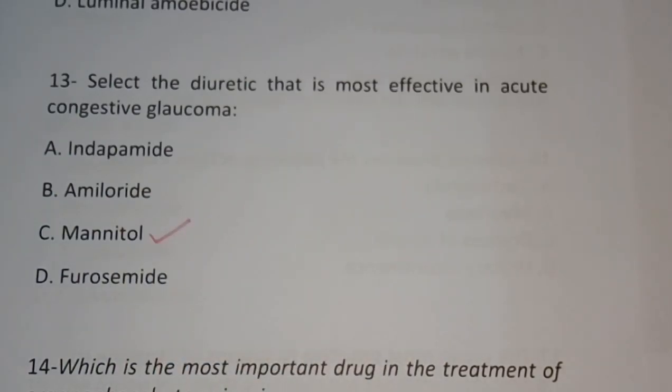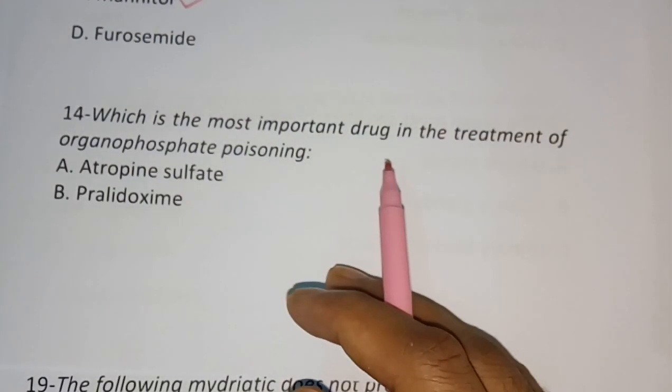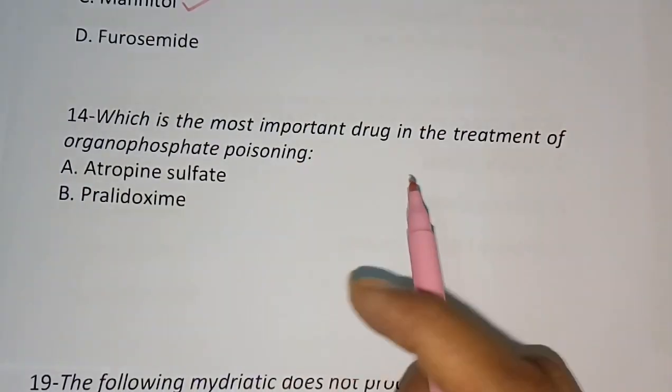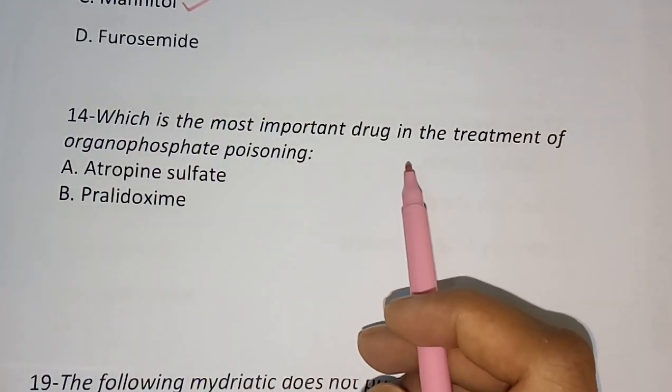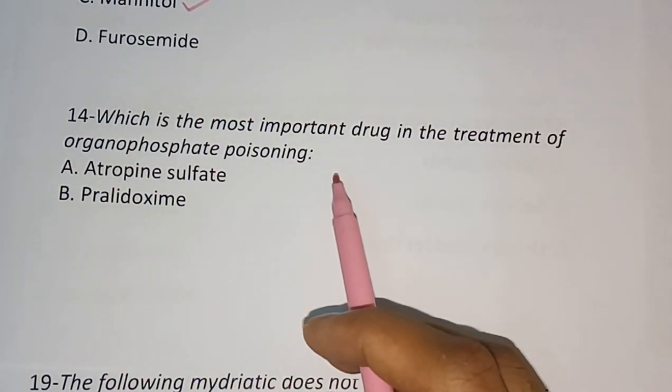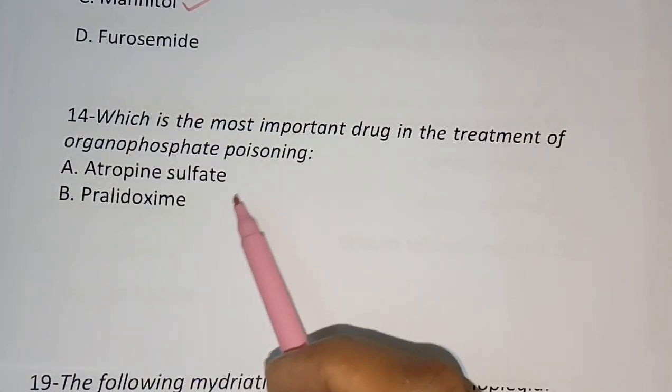Question number fourteen: Which is the most important drug in the treatment of organophosphate poisoning? The correct answer is atropine.